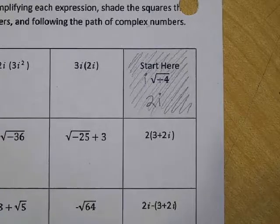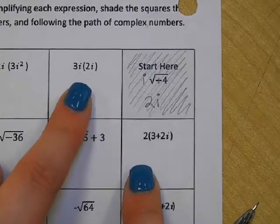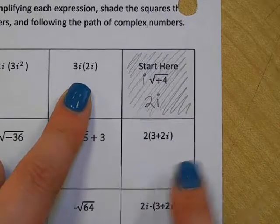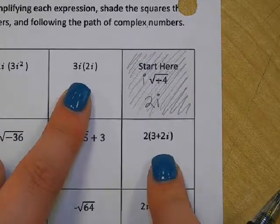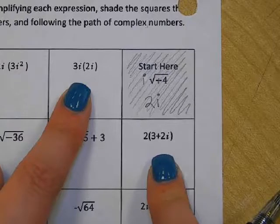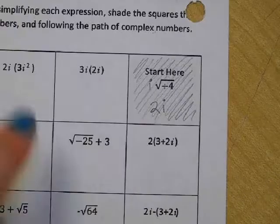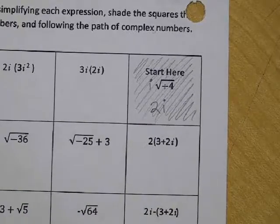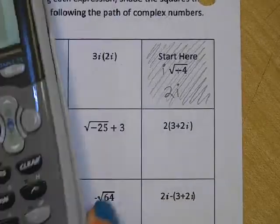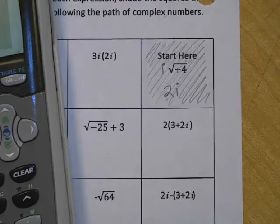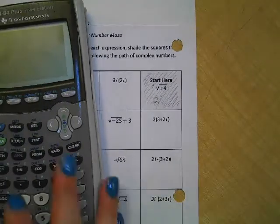So the next option we have is we can go left and do 3i plus 2i, or we can go down and do 2 times 3 plus 2i. We're actually going to use our calculator to do the maze because we learned how to do this by hand yesterday. Now we're going to use the calculator and let the process go a little bit faster.